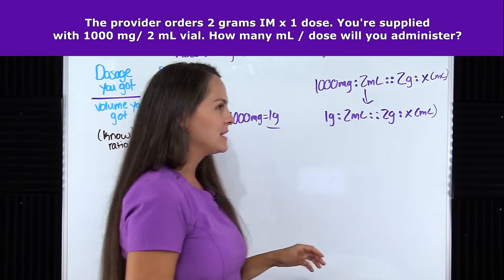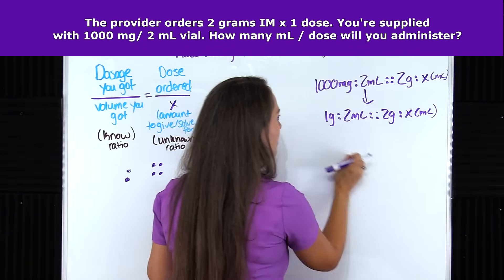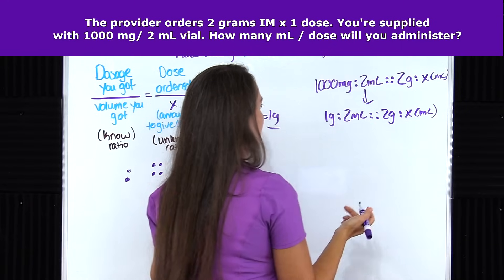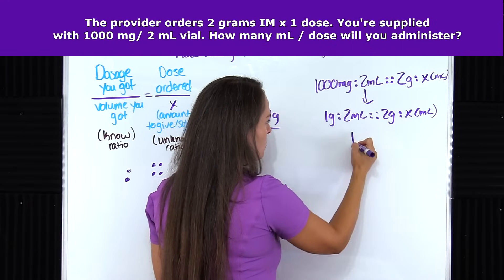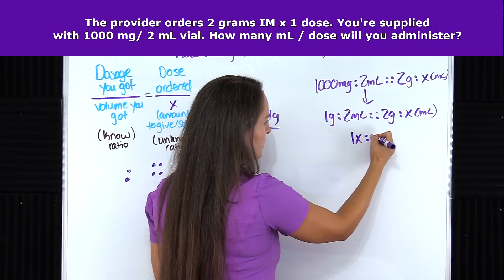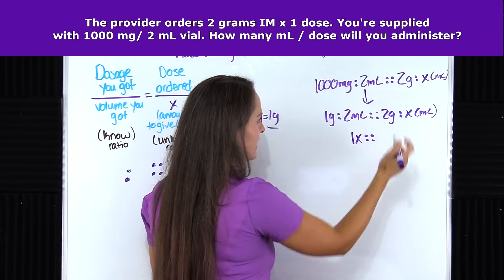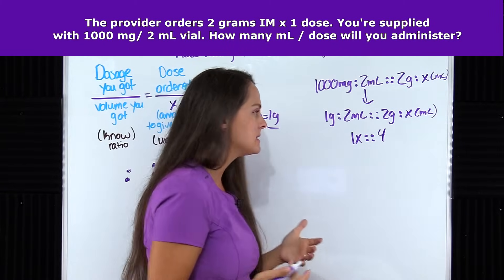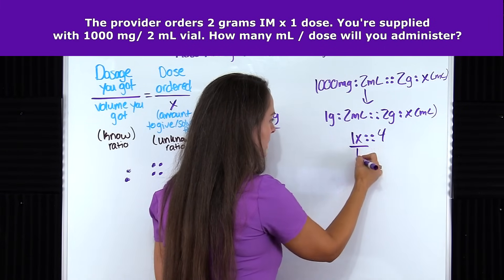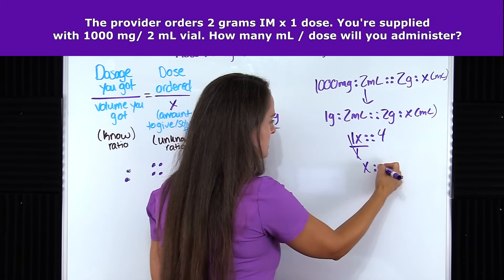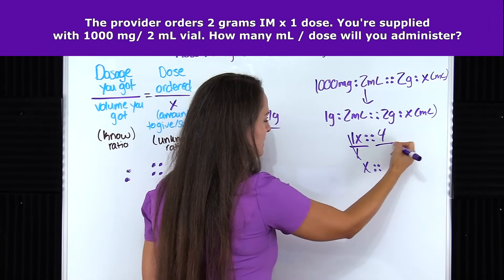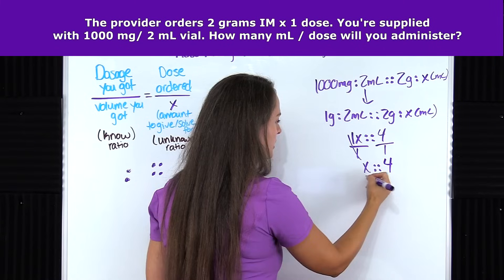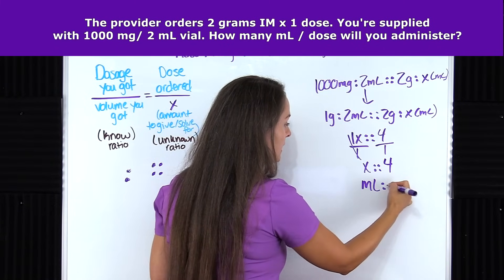Now I'm ready to solve. With this notation you outer multiply and inner multiply instead of cross multiplying. Outer: 1 times x is 1x. Then the double dots as the equal sign. Inner: 2 times 2 is 4. To get x by itself, divide both sides by 1 — that cancels out, leaving x equals 4 divided by 1, which is 4. Since x represented milliliters, the answer is 4 milliliters.